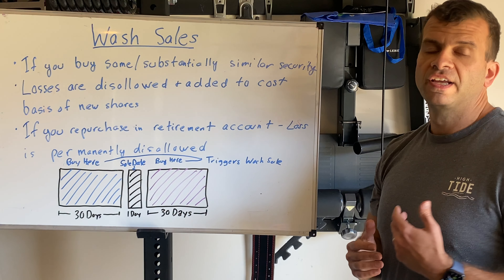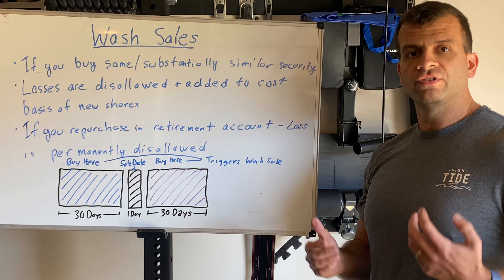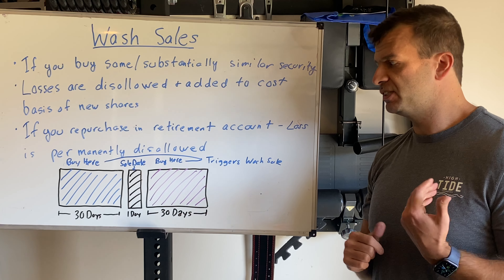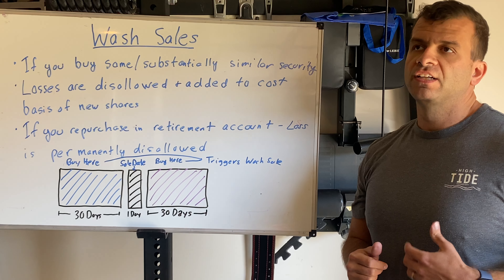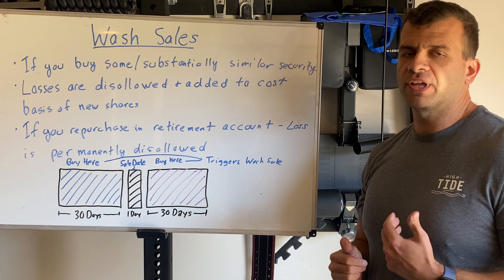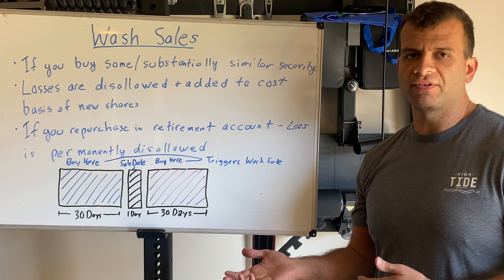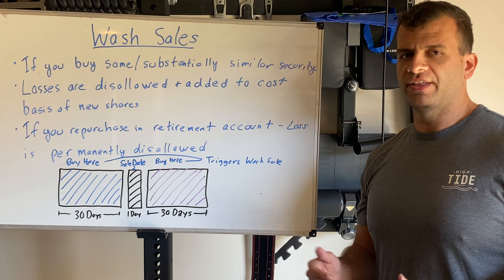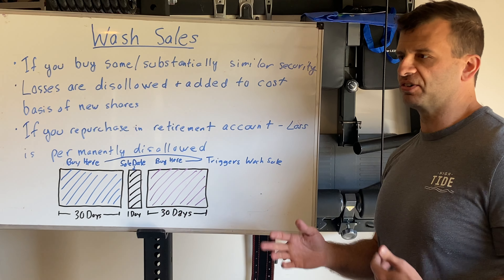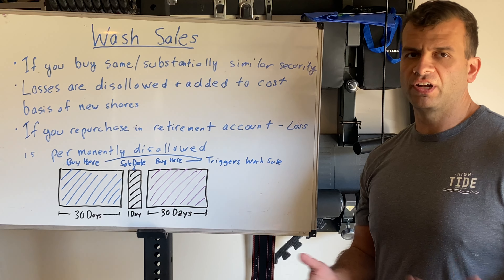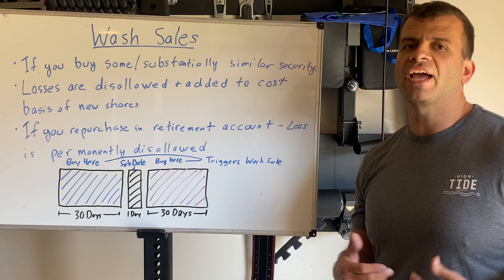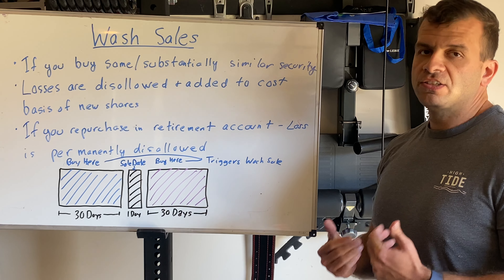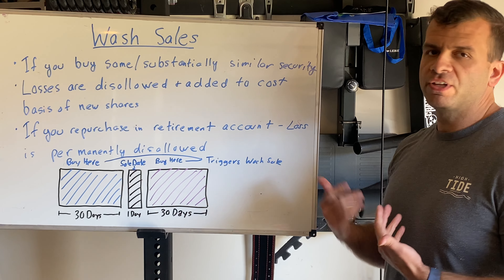So what happens? If you buy the same or substantially similar security, the losses are disallowed — but that loss is added to your new cost basis. However, there's a critical exception: if you do it in a retirement account, that loss is permanently disallowed. People think they can sell Procter & Gamble at a loss in their main account and then buy it in a retirement account to skirt the rules — but no, that loss is permanently disallowed and is not even added to your cost basis. You lose it.